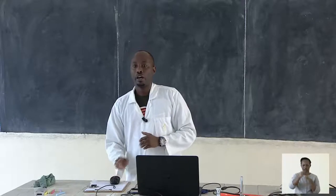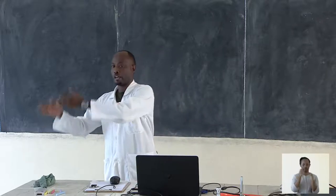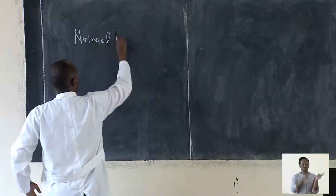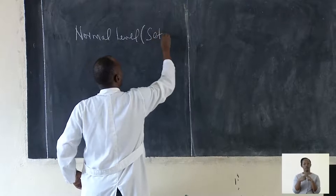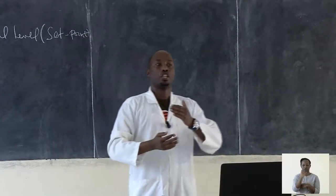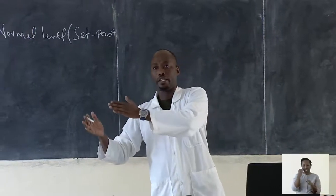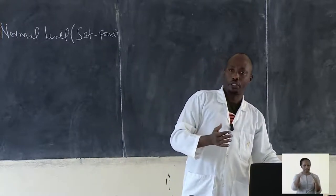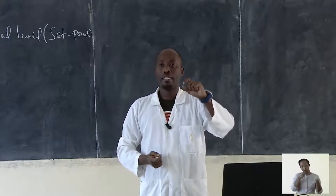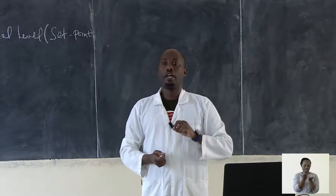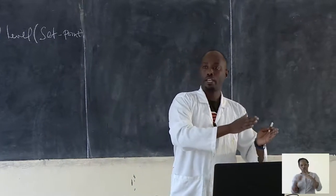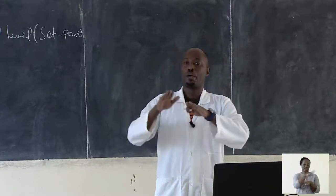Once we talk about the internal environment, it always has a normal level called a set point. There must be a point it has to be set on. Any change from the set point activates a control system. These are the systems that control any slight change in the body, which returns the condition back to normal. If it is taken back to normal, that brings it back to the set point.